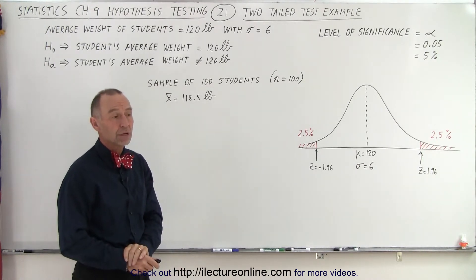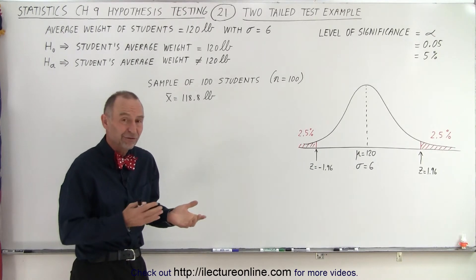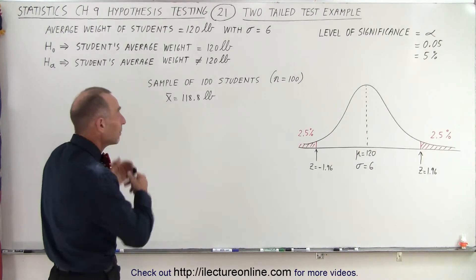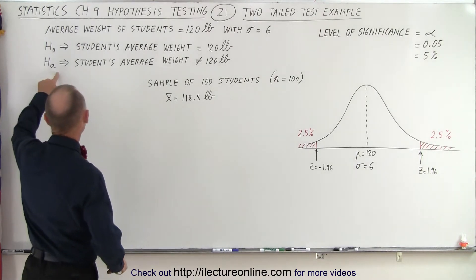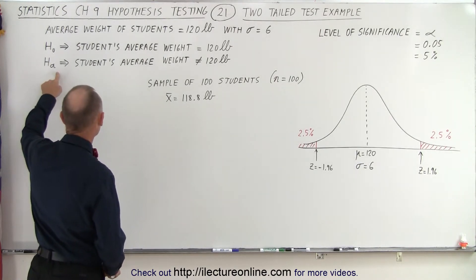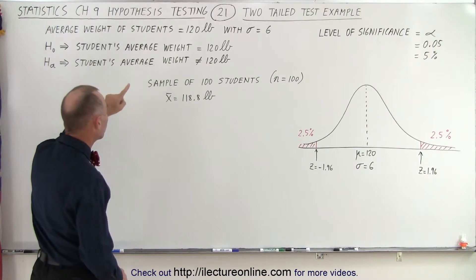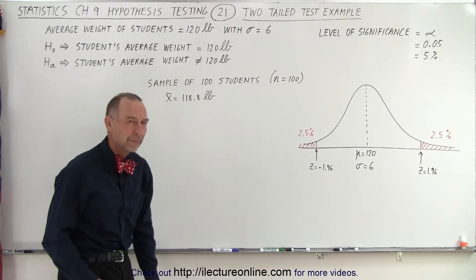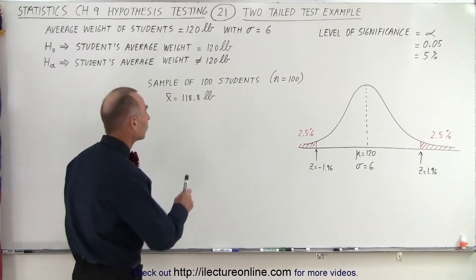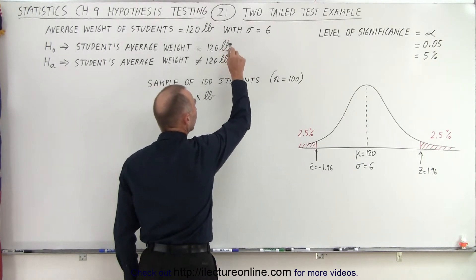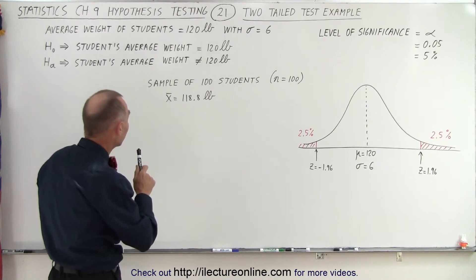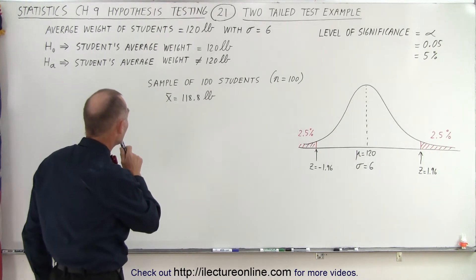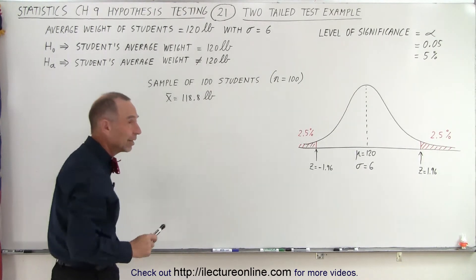So if we end up with a sample that is far away from 120 pounds, we'll probably end up rejecting that null hypothesis and accept the alternate hypothesis where it says that the student's average weight is not equal to 120 pounds. But notice here that we didn't imply that it was 120 pounds or less. We just said that the null hypothesis was that the student's average weight was 120 pounds, and the alternate is that it's not 120 pounds.